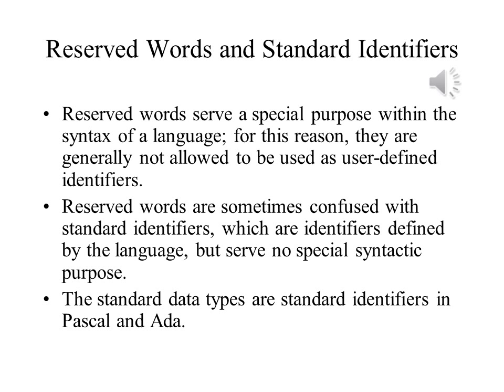Reserved words usually serve a special purpose within a language's syntax. They can indicate a particular type of statement, a particular data type, or serve as a delimiter — which is why you will see 'begin' and 'end' in many languages. Most languages have reserved words, but they may also have standard identifiers. Standard identifiers serve no special syntactic purpose, which makes them quite different from reserved words. A standard identifier is predefined and may have a predefined value if it is a constant, or it might be a predefined data type, function, or procedure. Another difference is that you can redefine them in many cases — for example, if 'pi' is predefined as 3.14, you might be able to redefine it as 3.14159. Standard identifiers are common in Pascal and Ada.